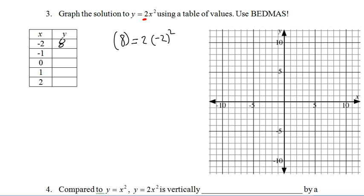If I put in negative 1, negative 1 squared is 1 times 2. The right side will be 2, so I also want the left side to be 2. So if y equals 2, that will make it true. 0 squared is 0 times 2 is 0. 2 and 8.